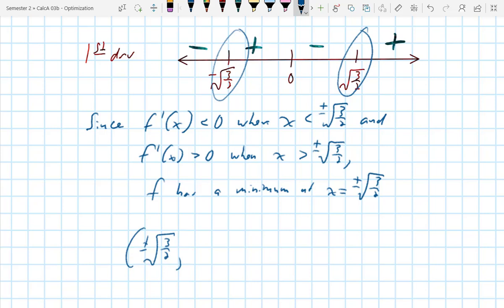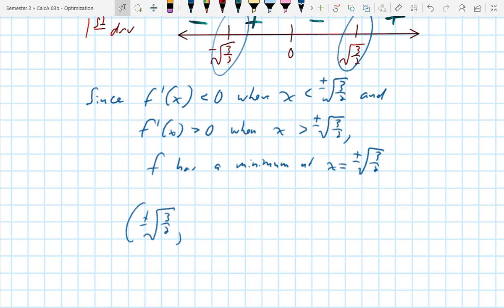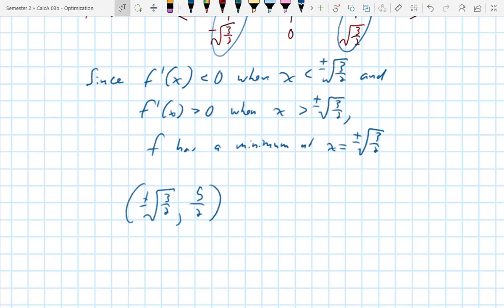So that shows that the minimum occurs at plus or minus root 3 halves, comma, what would the other ordered pair be? 4 minus x squared, 4 minus 3 halves, 5 halves.